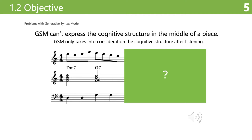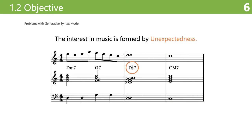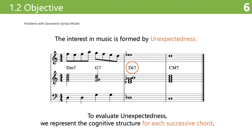However, there is a problem with ZSM. ZSM can't express the cognitive structure in the middle of a piece. In other words, ZSM only takes into consideration the cognitive structure after listening. Why is the cognitive structure in the middle of a piece so important? The next example is a little different from the previous one. Please listen carefully. This time, a dominant seventh chord is inserted, which is unexpected. We assume that this kind of unexpectedness is what makes music so interesting. In order to discover and evaluate this unexpectedness, we think that we need to represent the cognitive structure for each successive chord.